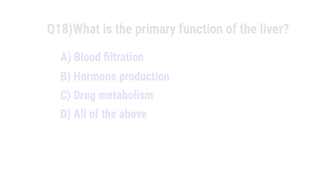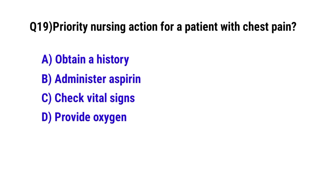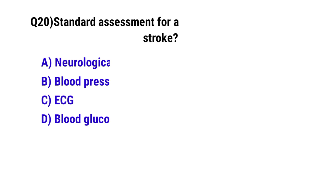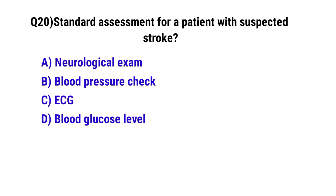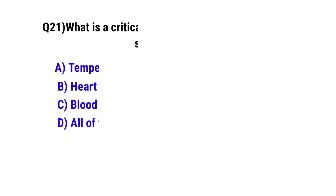Question number 19. What is the priority nursing action for a patient with chest pain? The correct option is D. Provide oxygen. Question number 20. What is the standard assessment for a patient with suspected stroke? The correct option is A. Neurological exam.